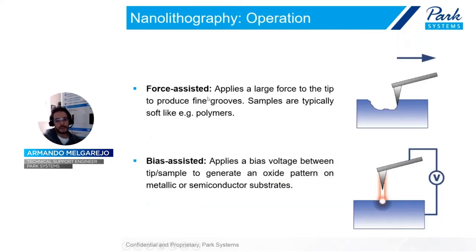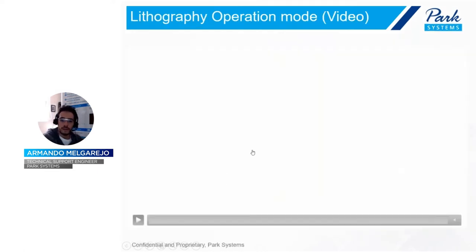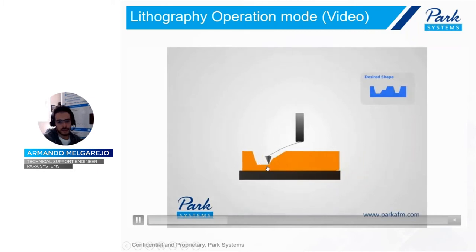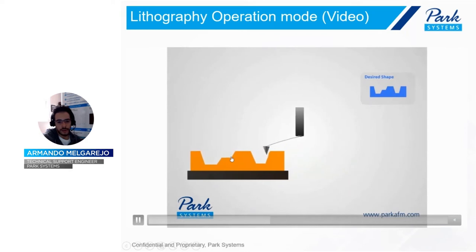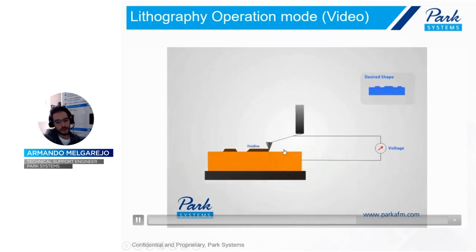We have two main classifications based on operation mode. The first is the force-assisted method, which consists of applying a certain amount of force to the sample to create defined grooves — typically on soft samples like polymers, as we can see in the image. The second option is the bias-assisted mode, which consists of applying a certain amount of voltage to create oxide patterns on the surface. The sample has to be able to generate oxide — like metallic or semiconductor substrates. You apply force or voltage, and depending on the amount, you create the desired shape or oxide patterns.